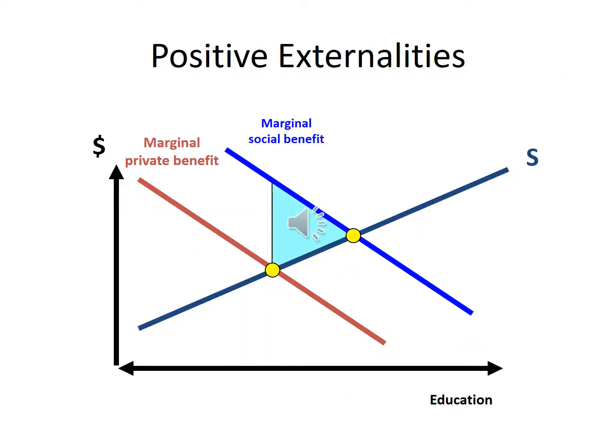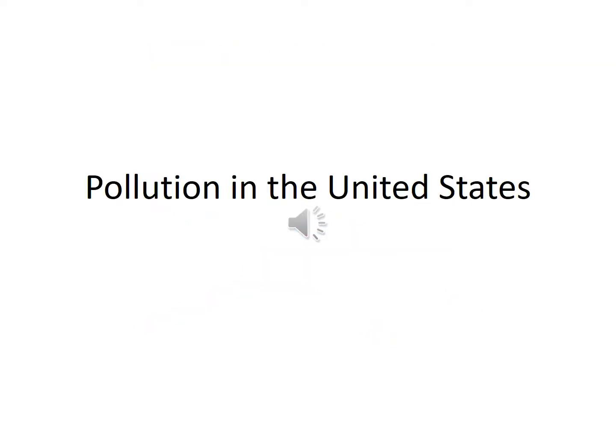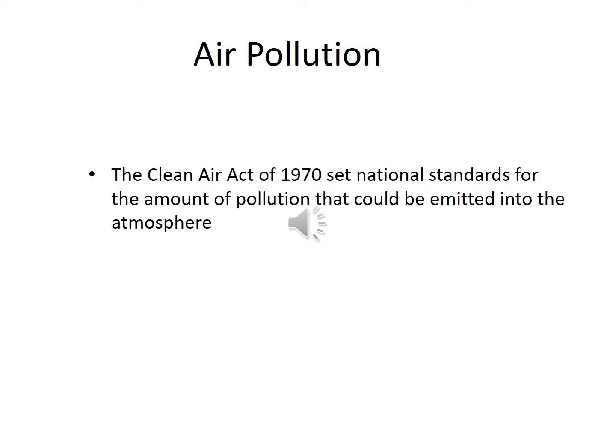The figure shows positive externalities. Pollution in the United States. Air pollution: the Clean Air Act of 1970 set national standards for the amount of pollution that could be emitted into the atmosphere.